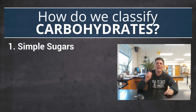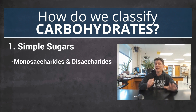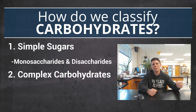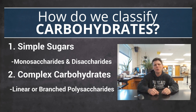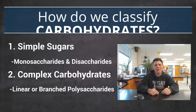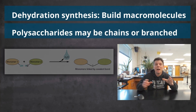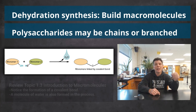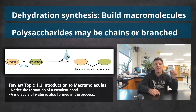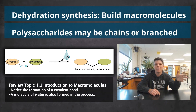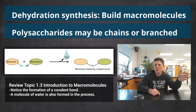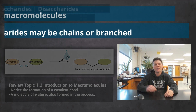Carbohydrates can be classified as simple sugars, which includes monosaccharides and disaccharides, or complex carbohydrates, which are also called polysaccharides. Polysaccharides are built when chemical reactions link monosaccharides together by forming covalent bonds that connect the smaller molecules into larger chains or branched molecules.